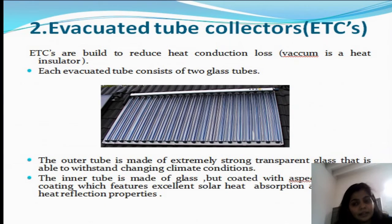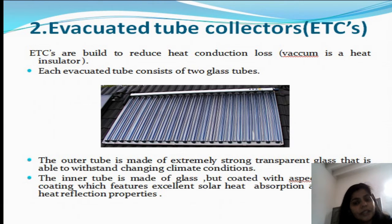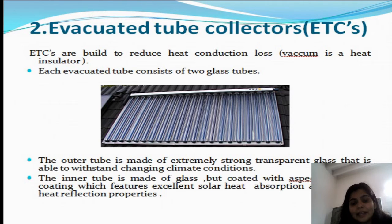In the other type — evacuated tube collectors — they are built to reduce heat conduction losses. They consist of two glass tubes, as we can see in the figure. The outer tube is made of extremely strong transparent glass that is able to withstand changing climatic conditions, while the inner tube is made of glass but coated with a special coating which features excellent solar heat absorption qualities.